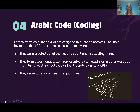Finally, we have Arabic code. Arabic code is a process by which numbers are assigned to question answers. They were created out of the need to count a list of existing things, so they can be used in everything you can imagine — from mathematics to geography. They form a positional system represented by the same glyphs, going from zero to nine, and serve for representing quantities. The Arabic coding you're going to be using is a coding type where for each letter in the alphabet you have its corresponding number — so for A you get one, for B you get two, and so on.